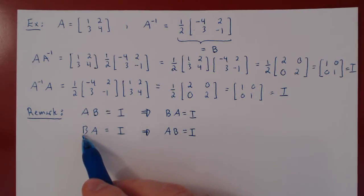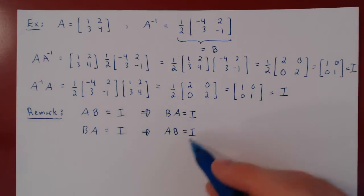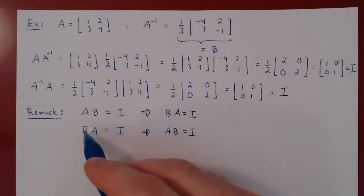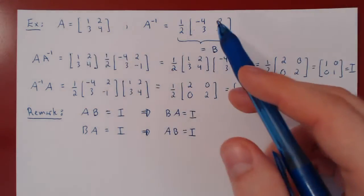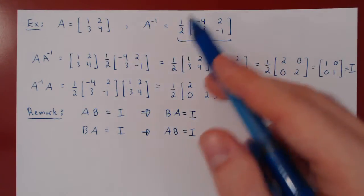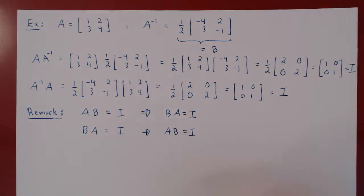If you prove that B times A equals I, then automatically A times B will also equal I, which proves that B is the inverse of A. The word 'the' is used for inverse because the inverse is unique — there is only one, if it exists. This is something we'll prove later on. You may ask where this matrix is coming from — how did I find it in the first place? Let's look at a very simple but very useful result for the inverse of a 2 by 2 matrix.